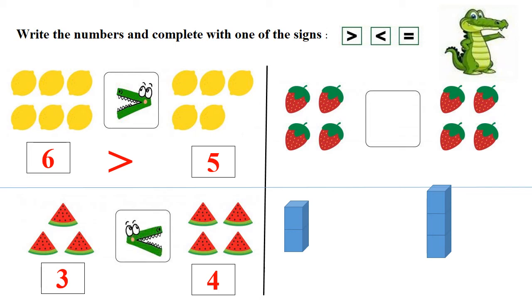We are going to use the sign that opens to the bigger number. Now moving to the strawberries, let's count together. One, two, three, four. We have four strawberries. One, two, three, four. We have four strawberries also, so it's the same number. So Charlie the crocodile is not going to open his mouth, his mouth stays closed. So we are going to use the equal sign.